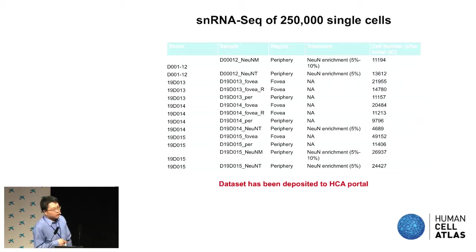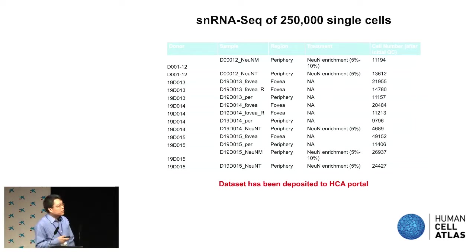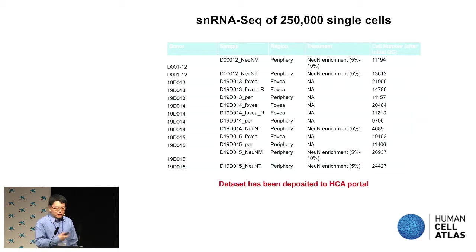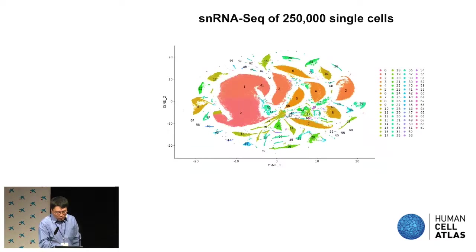To capture rare cell types, we perform neuron enrichment. Because we work with nuclei, we don't have surface markers to use, but we find there seems to be a density gradient among different cell types and we try to use that gradient to enrich the rare ones. For the other condition, we just take the nuclei and run them through the machine. In total so far we have generated about 40 million single cells from 40 individuals.